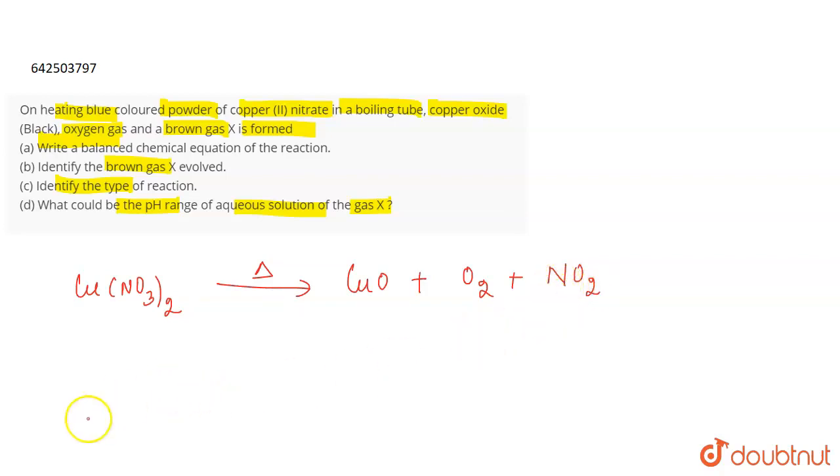So if you balance this reaction, you will get 2 Cu(NO3)2, 2 CuO and 4 NO2. So this is the correct balanced chemical equation for the reaction and the gas X which is formed, the brown gas X is nitrogen dioxide.